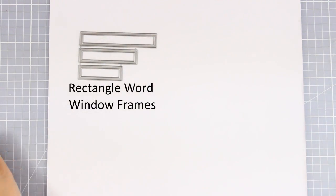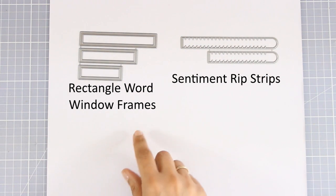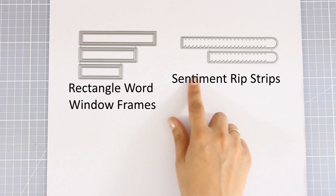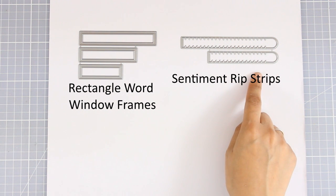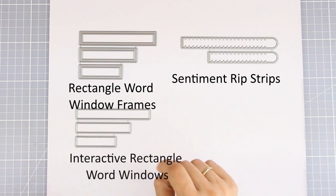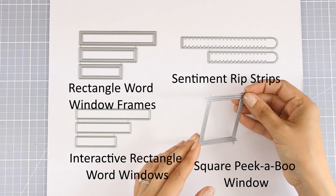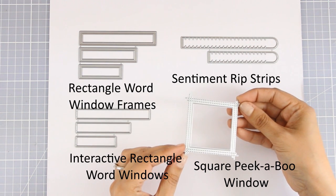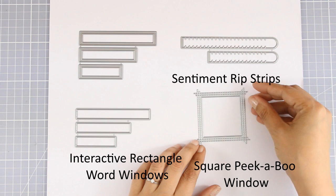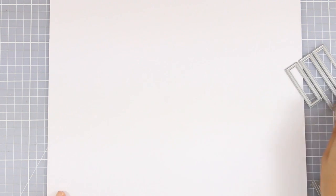And now let's move on to some dies that are great for placing your sentiments. The first one is the Rectangle Wall Window Frames that you can cut out to stamp your sentiments, and the second one is a fun one called Sentiment Rip Strips that the recipient has to rip off the paper so that the sentiment can be revealed. There is also the Interactive Rectangle Windows that doesn't cut on one side, and this is a lovely one that adds stitching all around in a square, which is a great way to place your focal points.